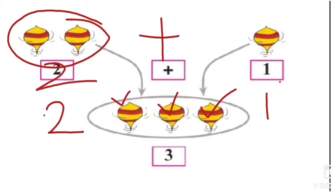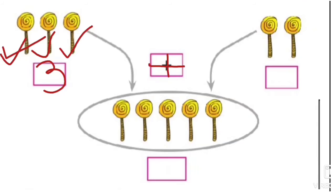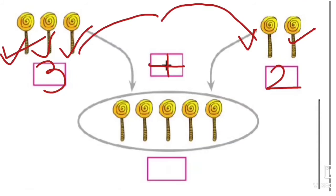So dear students, see this picture. What have you seen? Lollipops! Do you like to eat lollipops? How many lollipops are here? Let's count: one, two, three — we write three here. This is plus, which means we have to add. How many lollipops to add? One, two — two lollipops. When we add three and two together, we get one, two, three, four, five — five lollipops!